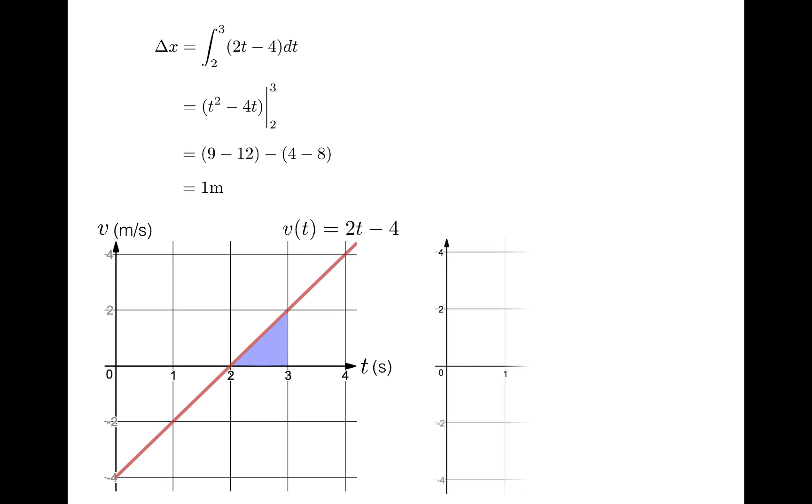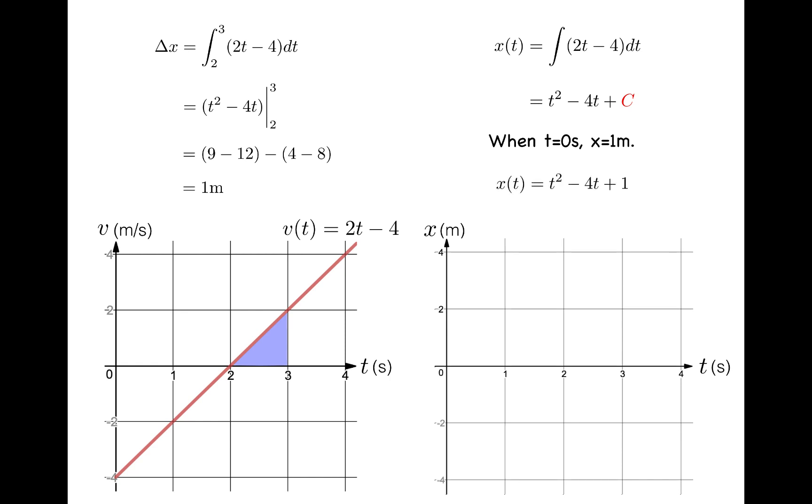If you're looking for a more general equation for position as a function of time, you need an indefinite integral. So x of t is the integral of 2t minus 4 dt, which is t squared minus 4t plus a constant. Don't forget the constant. When t is equal to 0, x is equal to 1 meter. That was given to us in the problem. So c is 1, and x of t is t squared minus 4t plus 1. This is exactly the parabola we found on the last slide, as it should be.